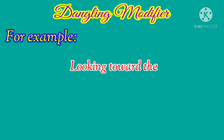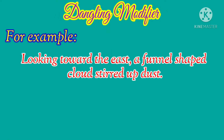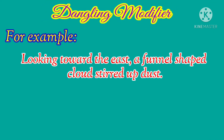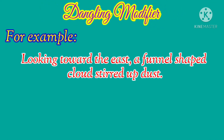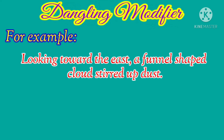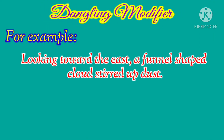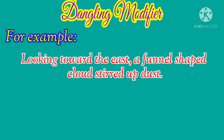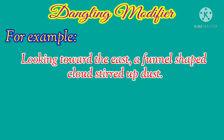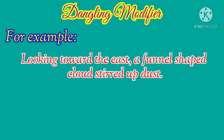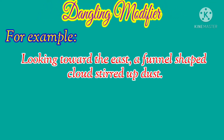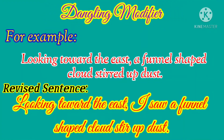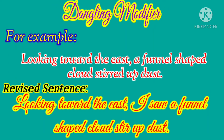For example: 'Looking toward the east, a funnel-shaped cloud stirred up dust.' In this example, it does not specify who is looking toward the east — there is nothing in the sentence to which the modifying phrase 'looking toward the east' can logically refer. To correct it, leave the modifier as is and change the main part of the sentence so it begins with the term actually modified. The revised sentence is: 'Looking toward the east, I saw a funnel-shaped cloud stir up dust.'